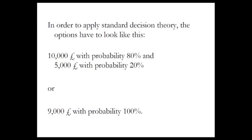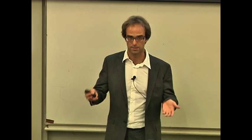Each option must have a number of outcomes that are numerical, obtained with quantitative probabilities, and you have to know all these numbers — otherwise you cannot proceed. So the outcomes would be, for example, ten thousand pounds and five thousand pounds with their respective probabilities. In the real world, even in this relatively simple example, you have to do a lot of work to bring it into that form. For example, ten thousand pounds could be the maximum rent you'd receive if the apartment is rented for the whole year, assuming they pay and don't move out early.